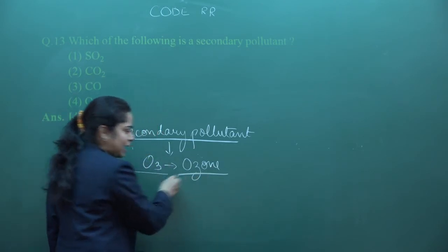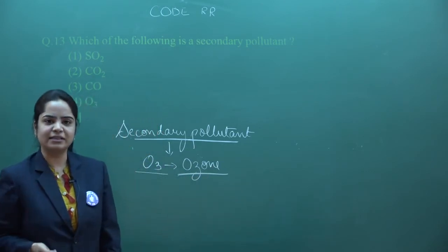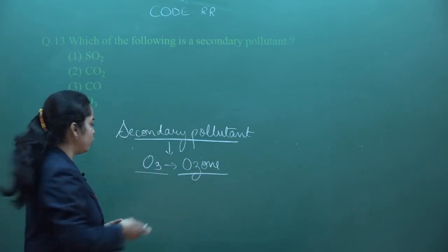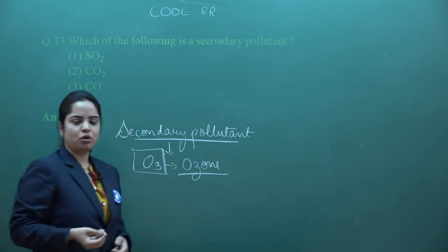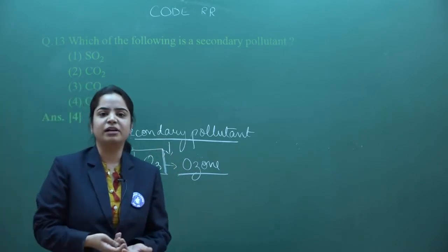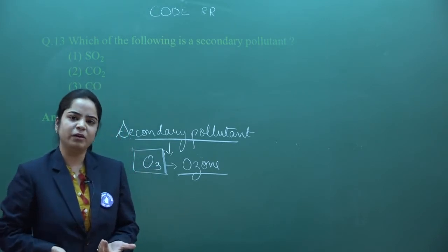Ozone is formed by the activities of some greenhouse gases. Ozone is actually formed when nitrous oxide, sulfur oxide quantity increases. That's why the ozone will be formed.